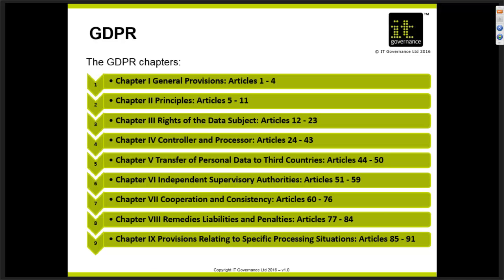The latter part of the regulation establishes independent supervisory authorities — each member state needs one. In the UK we have the ICO, the Information Commissioner's Office; in France, CNIL. There's also a chapter on cooperation and consistency between these authorities, and a chapter on specific fines — probably one of the big headline items from the regulation.